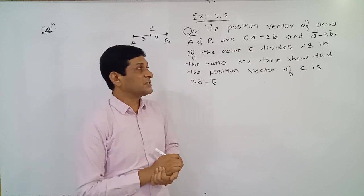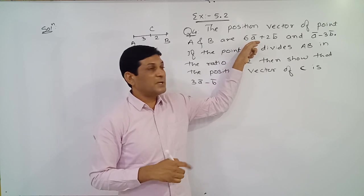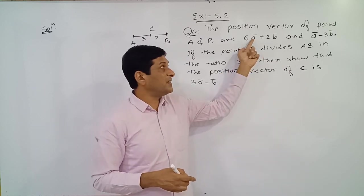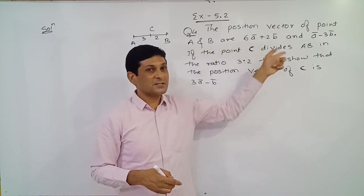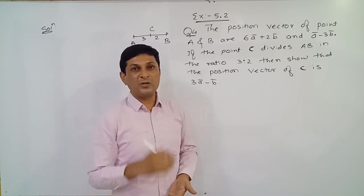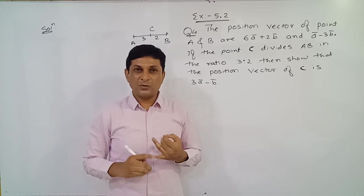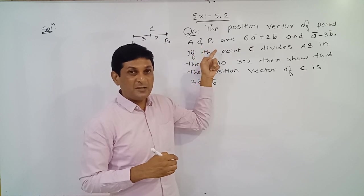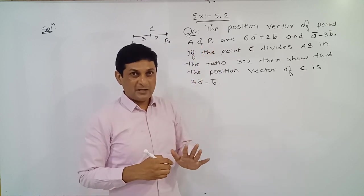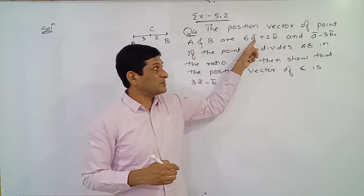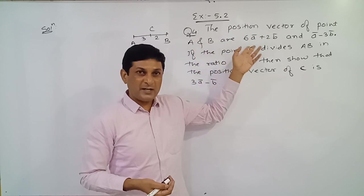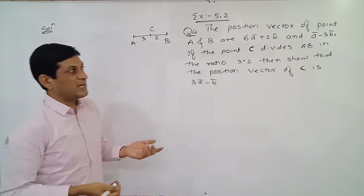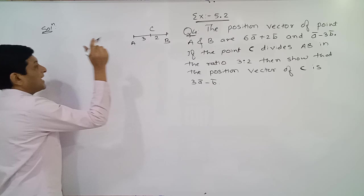If we observe, the position vector of point A is 6Ā plus 2B̄. Generally we denote position vector of point A by Ā, but here Ā and B̄ are already used as values of these position vectors. So we are not able to denote position vector of point A by Ā. That is why we will denote position vector of point A by P̄ and position vector of point B by Q̄.